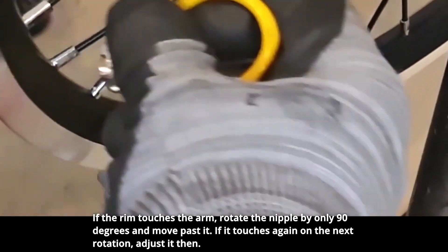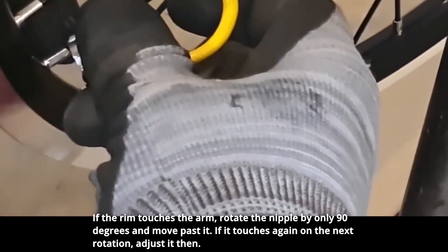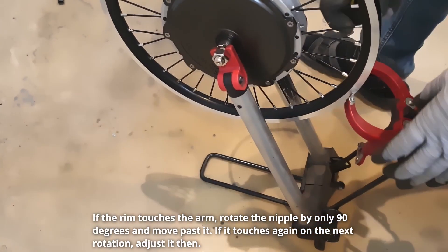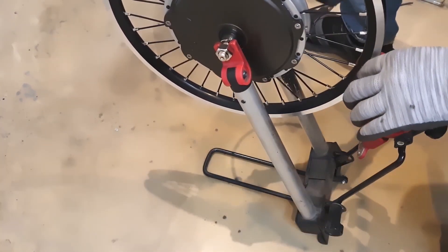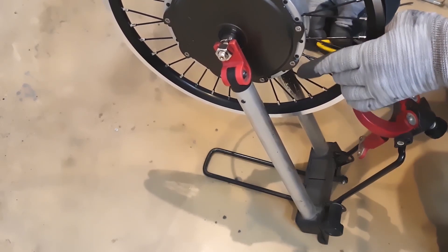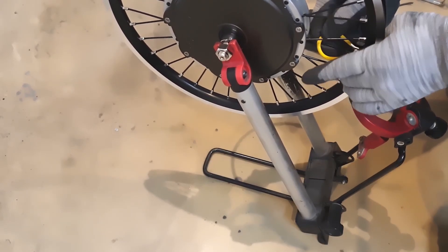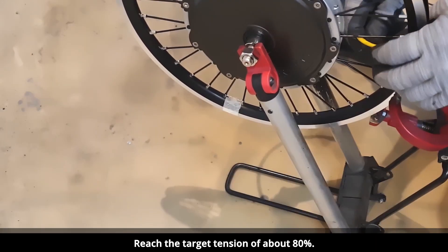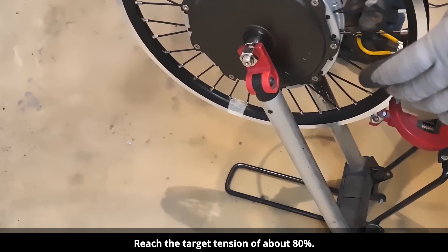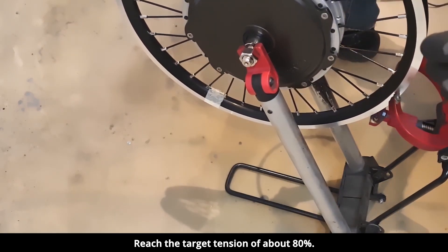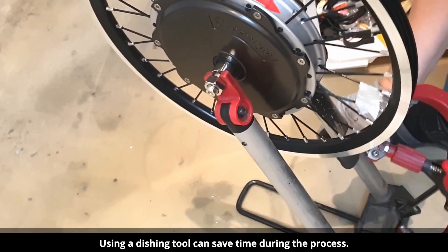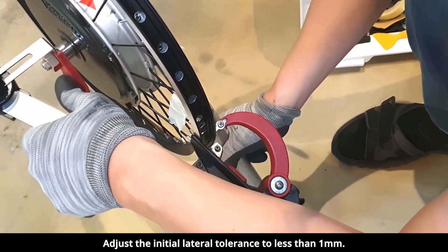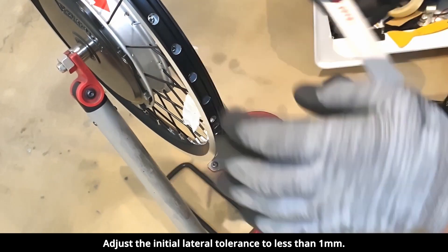If the rim touches the arm, rotate the nipple by only 90 degrees and move past it. Reach the target tension of about 80%. Using a dishing tool can save time during the process. Adjust the initial lateral tolerance to less than 1mm.